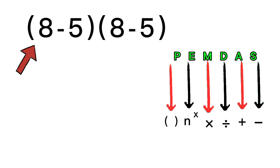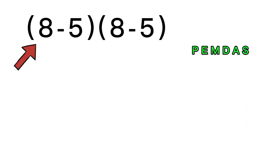So the correct order is parentheses first, then exponents, then multiplication or division from left to right, and finally addition or subtraction from left to right. Now, let's apply that to our problem.